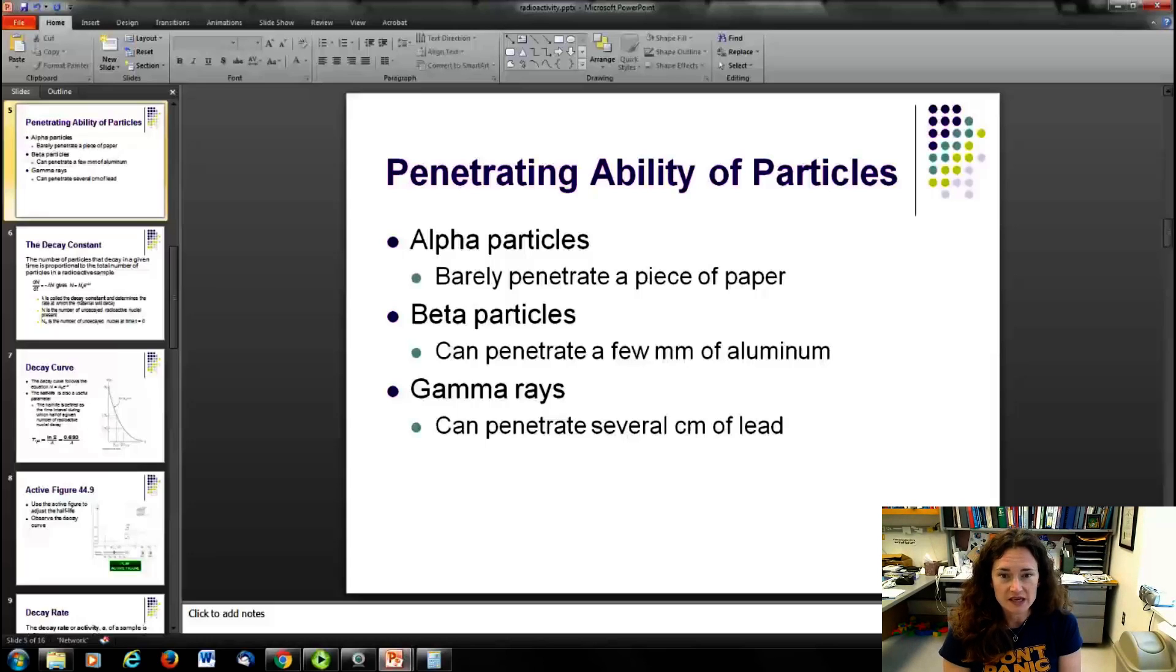Beta particles, they can actually penetrate a few millimeters of aluminum. They're much lower mass, and so with high speeds, it takes more to stop them. Gamma rays can penetrate several centimeters of lead. So it's very important to be careful around that kind of radiation.